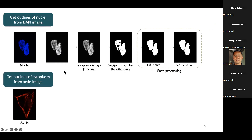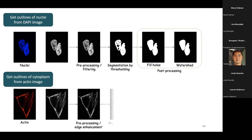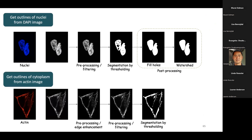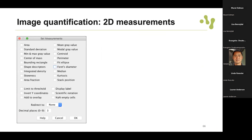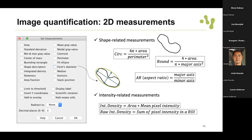To summarize, coming back to our workflow example, we have pre-processing, segmentation, and post-processing techniques that we can apply to both nuclei and actin to get the outlines of both. However, not always do you get an optimal result. Finally, you have a set of measurements you can define - in Fiji these include shape-related measurements, intensity-related measurements, and so on. I recommend looking at the Fiji documentation to find the most appropriate measurements for your problem.